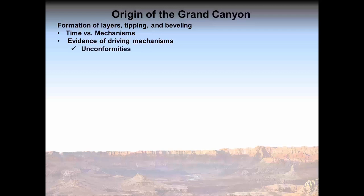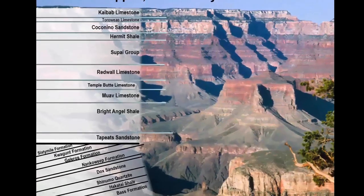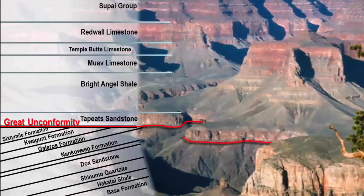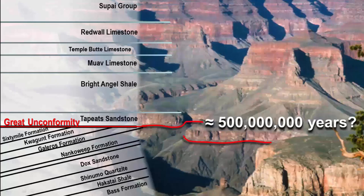Evidences of the compression event that are easiest to see are the canyon's unconformities between layers and the intrusion of quartz into crushed granite. The tipped layers below the Tapeats sandstone are visible in this graphic. The bevel line of contact between these tipped layers and the horizontal layers above is called the great unconformity. The great unconformity is alleged to represent around one-half billion years of time, where a mountain's tipped layers were horizontally beveled off by an undefined process. Again, time is a variable, not a mechanism.